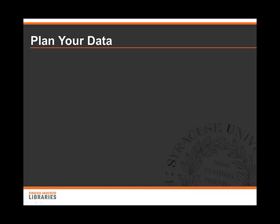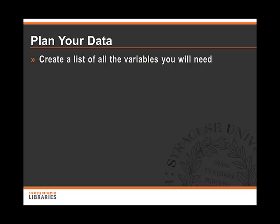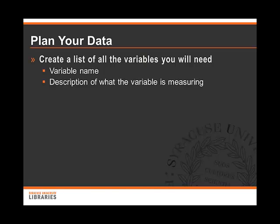Now that you know what analyses you will do, you need to determine what data you will need to conduct those analyses. To begin, create a list of all the variables you think you will need. If you are not sure if you will need a particular variable, include it — you can always drop it later on. When listing your variables, include the variable name, a description of what the variable is measuring, and the measurement level, namely continuous, categorical, nominal, etc.